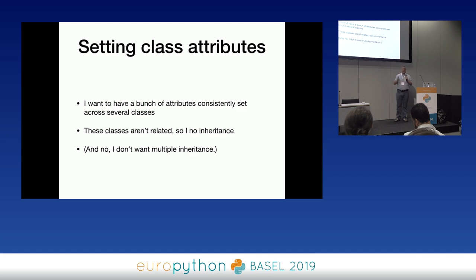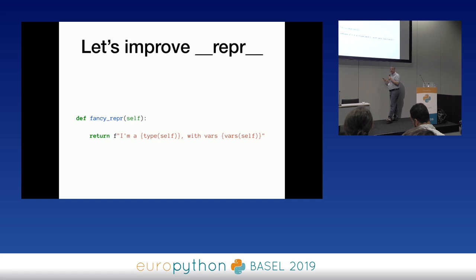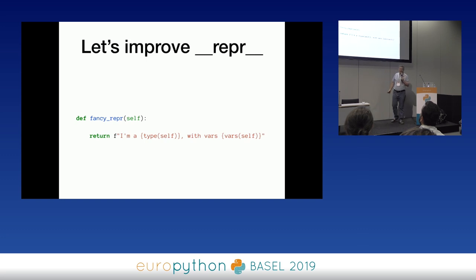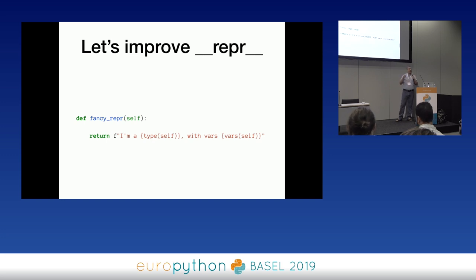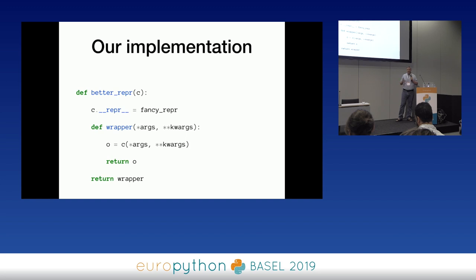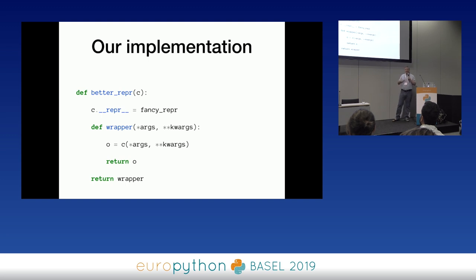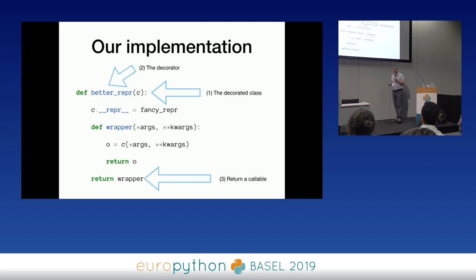No matter your perspective — and I'm very pluralistic on this issue — we might not want to use multiple inheritance. I want to have attributes consistently set across classes. Here's my example: I'm going to improve repr, which as it is isn't that useful. I'll have 'fancy_repr' that says what the object is, its type, and its vars. I want to apply this across different classes, so: def better_repr(C) — C is my class — I say C.__repr__ = fancy_repr. You can assign a method to a class this way. Then I define repr, create the object, return it. We have our decorated class, our decorator, and we return the callable — or we can just return the modified class directly.